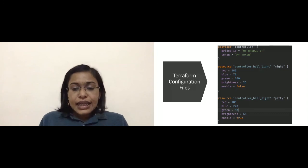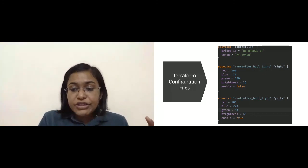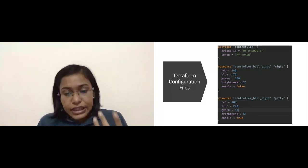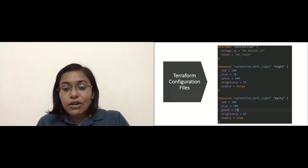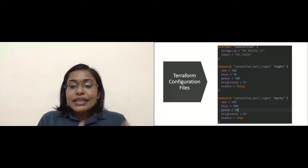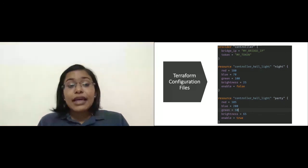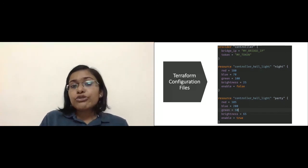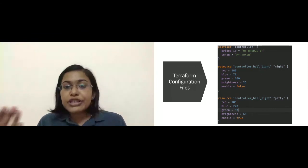Basically, I reuse the parameters and values in the configuration file to recreate requests and allow the API to perform CRUD operations. All these configurations are captured into a file called the Terraform configuration file, and the language used to write this file is called HCL — HashiCorp Configuration Language.